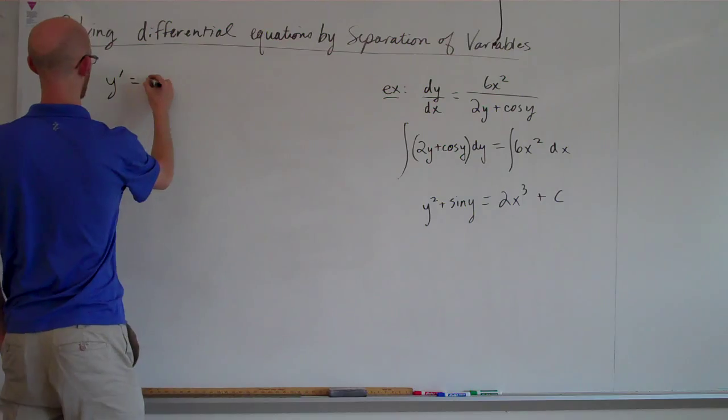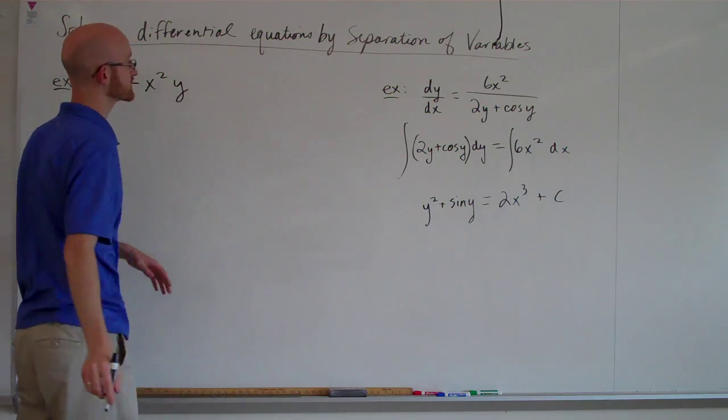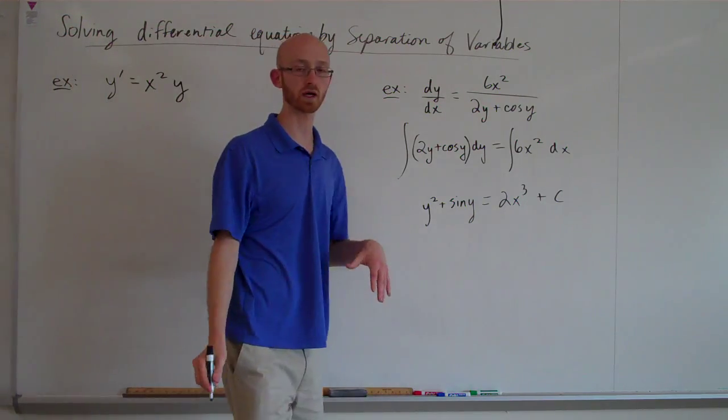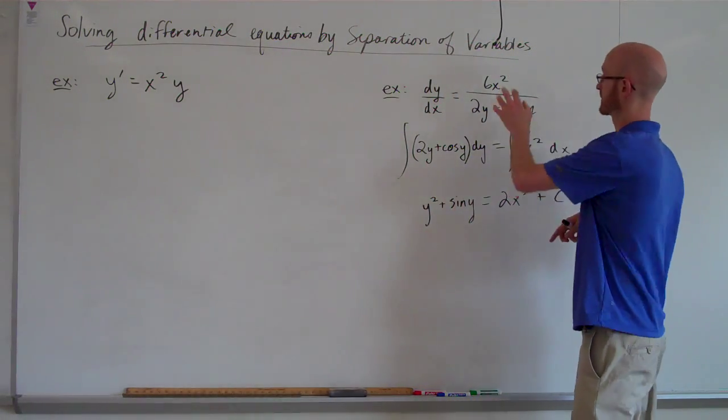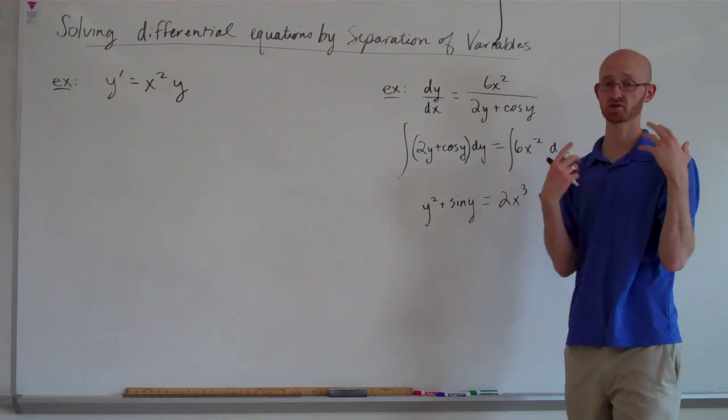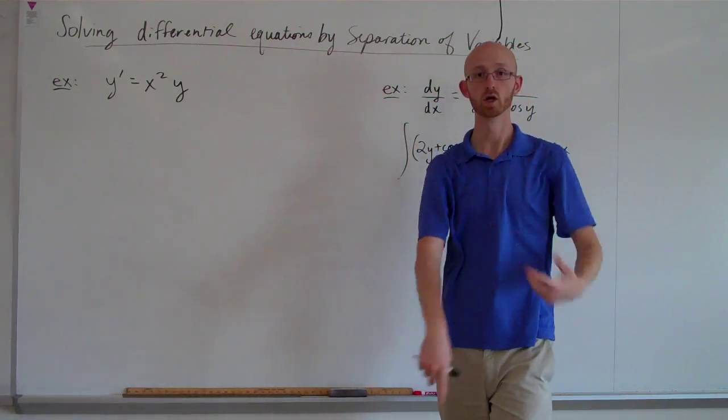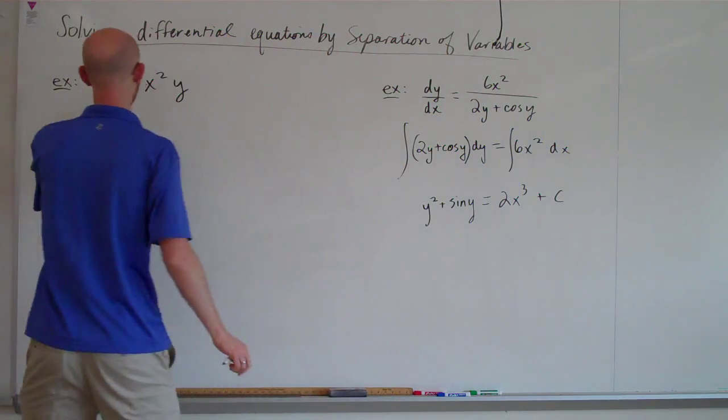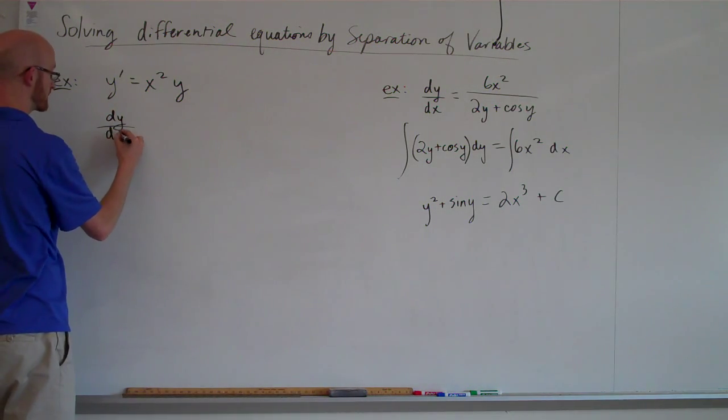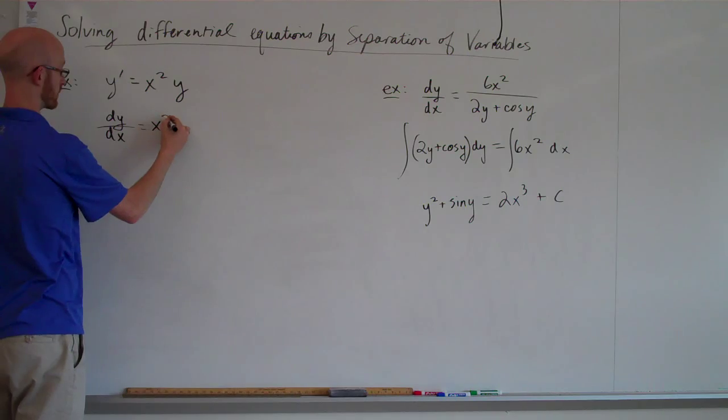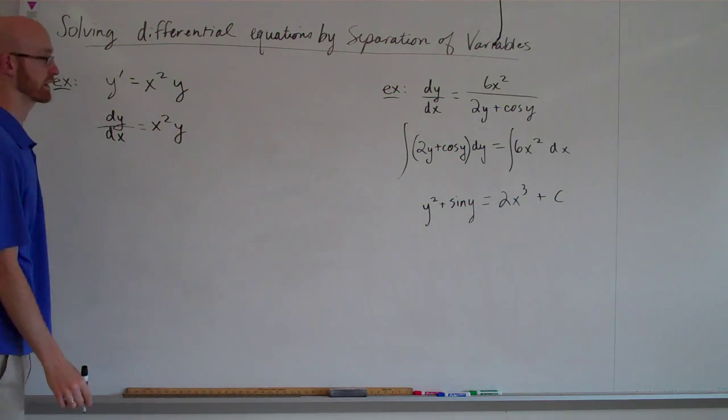Y prime is x squared y. So the previous two, hopefully you've had some kind of thought to yourself. But it was sort of like, well, in both of them, there were x's on top, y's on the bottom. It was kind of set up for you to just multiply and be fine. The first thing is, I do not like seeing y prime. Leibniz notation is much better. So I'm just going to replace y prime with dy dx.